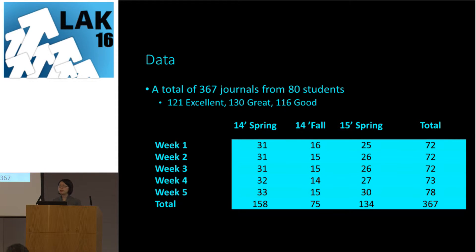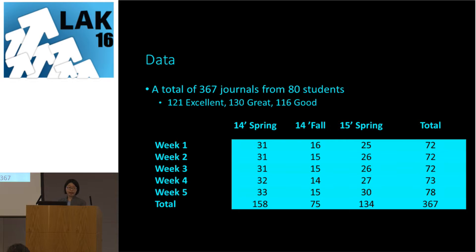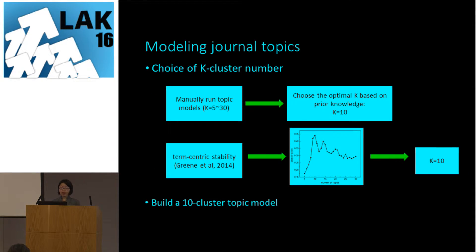The data used in this study is a total of 367 journals from 80 students. The grades are almost evenly distributed across the three levels. This table summarizes the structure of the data and the distribution of journals across different weeks and semesters.